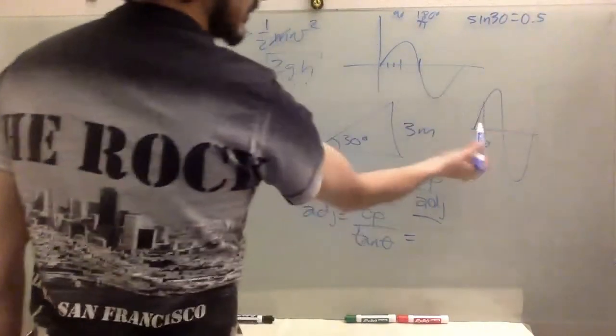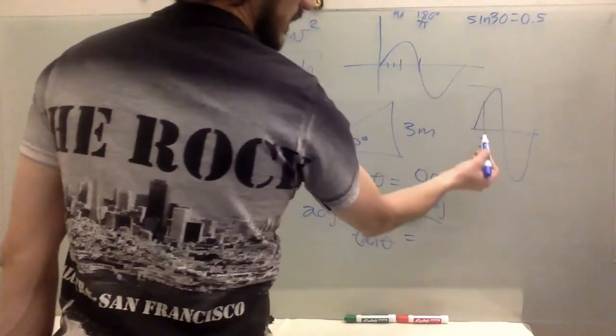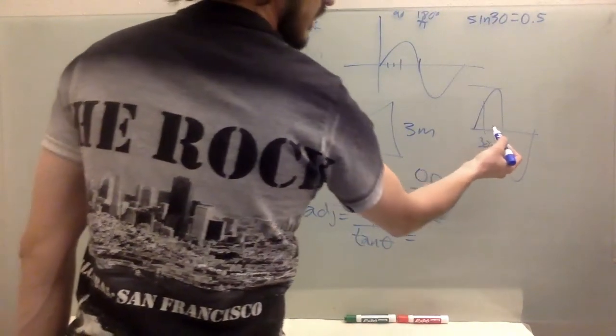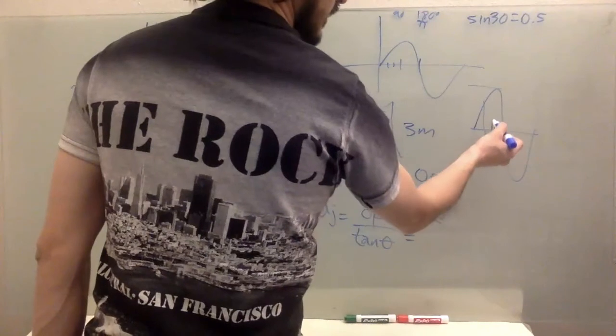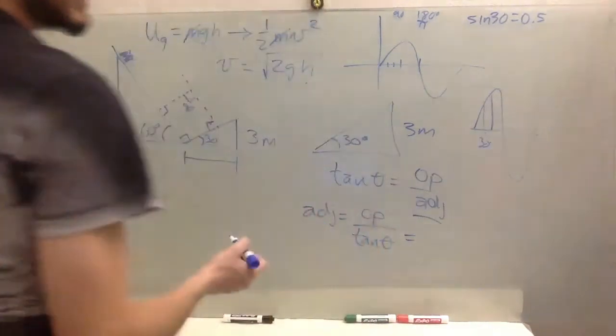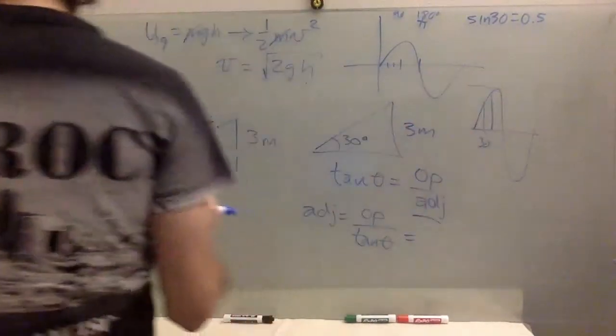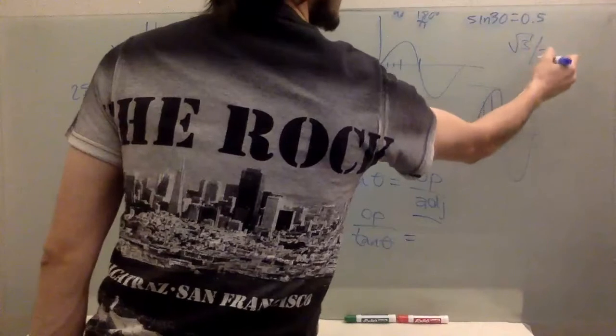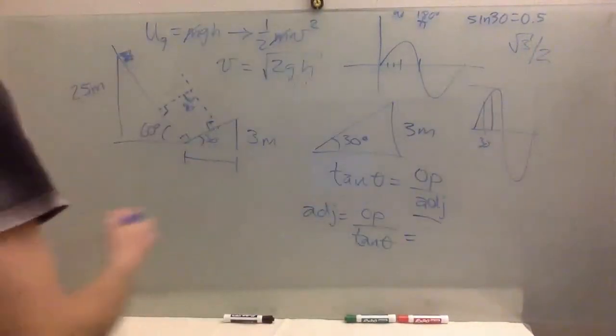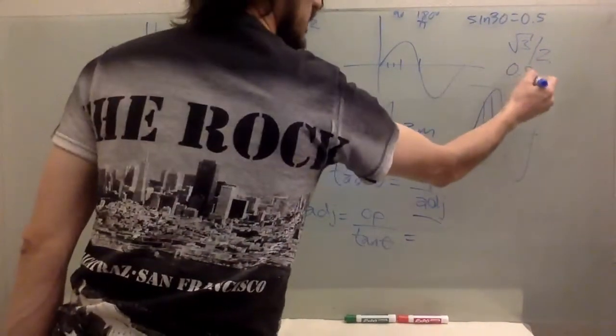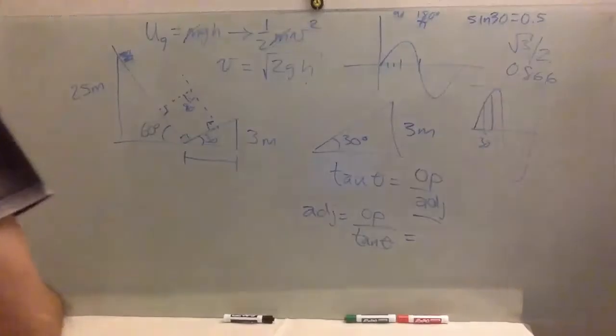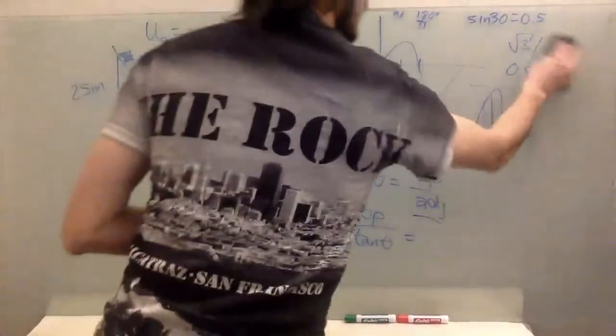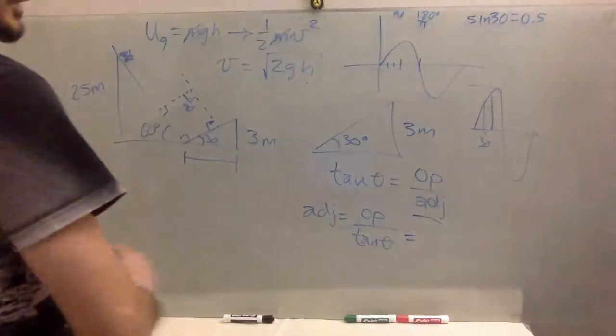So the sine of 30 is 0.5. You know, the maximum is one. And so it goes up a lot in the first 30. And then 60 degrees is square root of three over two. So that's that gives you the 0.866 that we're all familiar with. But right now we only need the sine of 30.